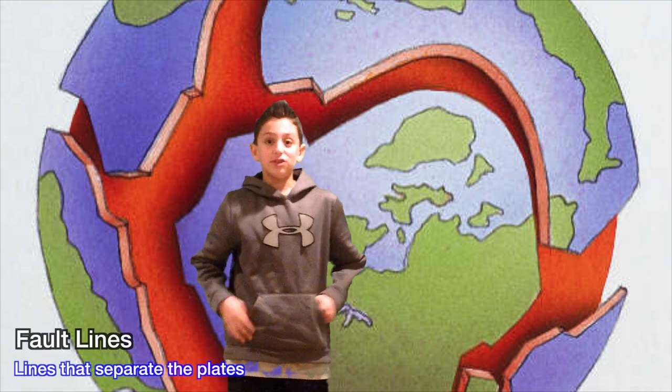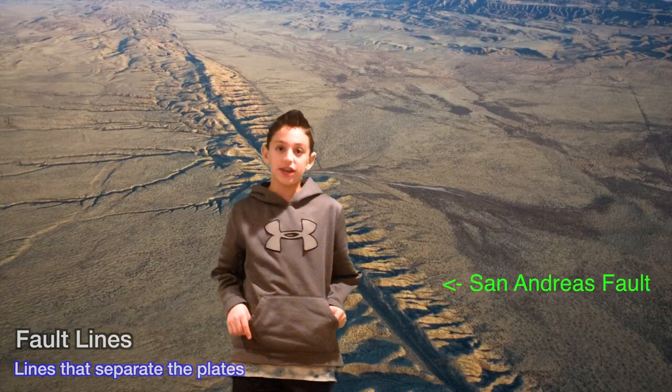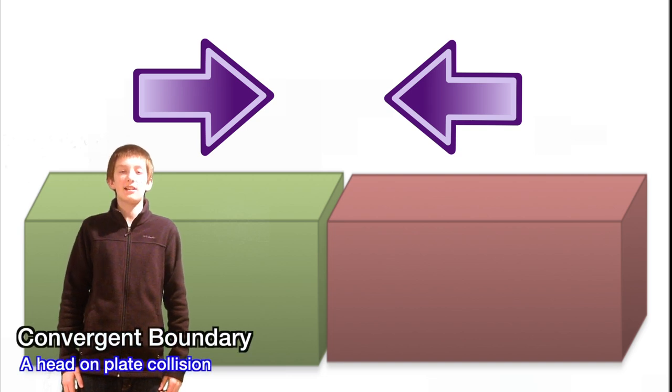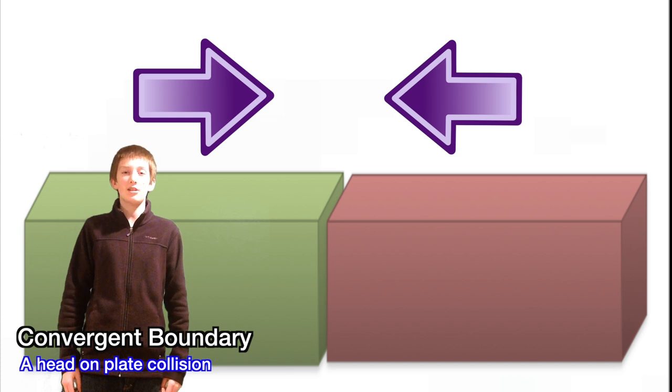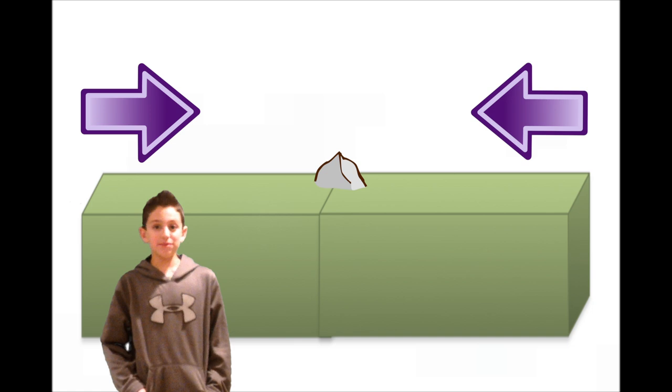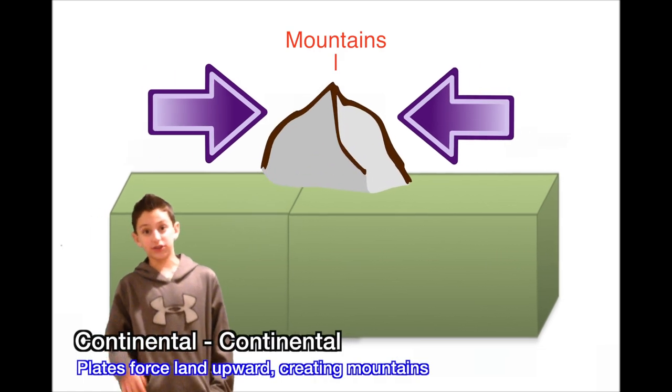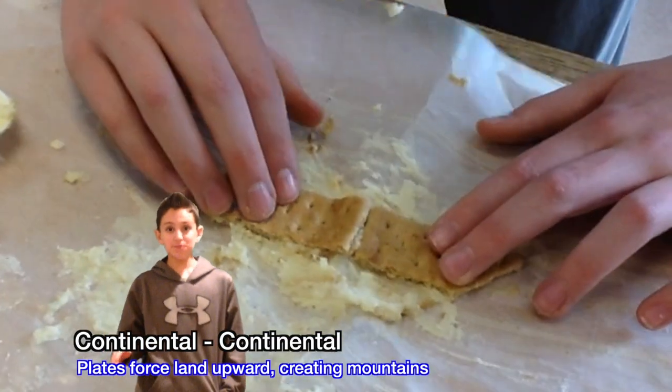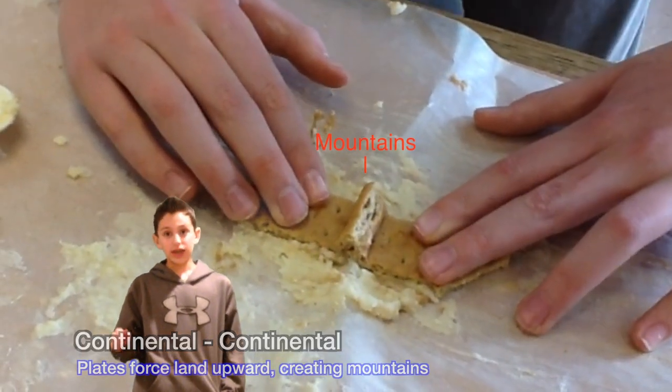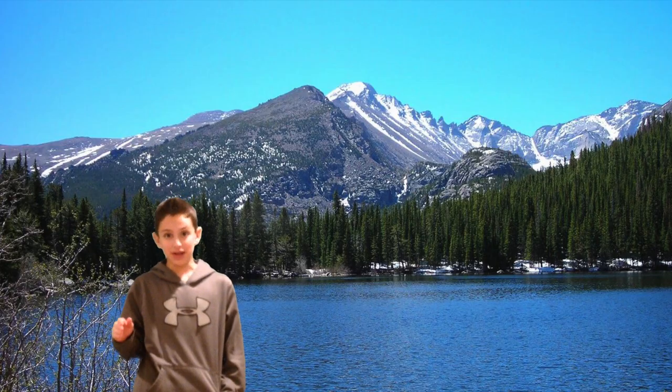Fault lines are the lines that separate the plates like cracks in an eggshell. A convergent boundary is when two plates collide head-on with each other. There are three types of convergent boundaries based on whether the crust is oceanic or continental. One of these three types is continental crust to continental crust convergent boundary. In this boundary, mountains are created, and in some rare cases, volcanoes. An effect of this boundary is the Rocky Mountains in the U.S.